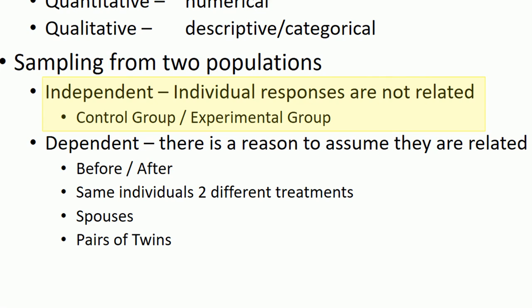Those two groups should be independent of each other. Whether or not one person from group A has a certain response should have nothing to do with whether someone from group B has some response. So completely independent of each other, unrelated, not affecting each other at all.